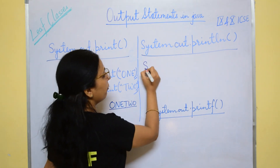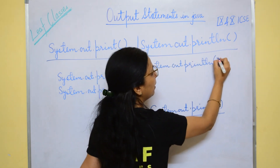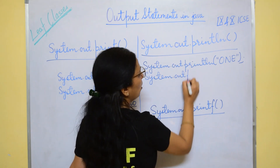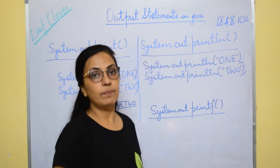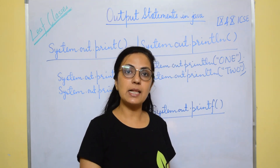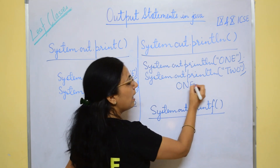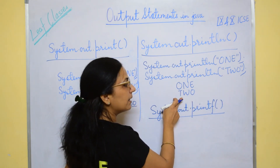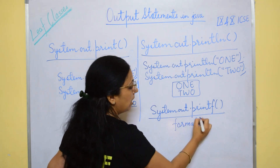Now if we write the same text using println, the output of 1 and 2 will be on separate lines. When we use println, after displaying the result on the console it shifts the cursor to the next line. So the output will be 1, and as soon as it displays 1 the cursor shifts to the beginning of the new line, and the next output is displayed on the next line.